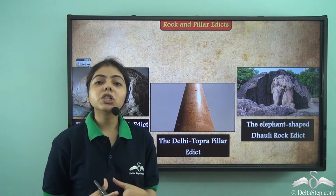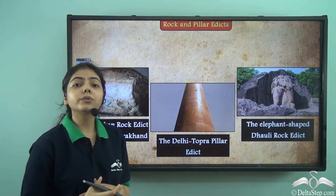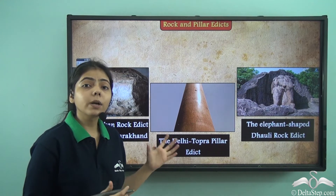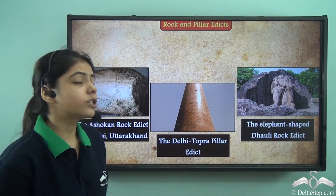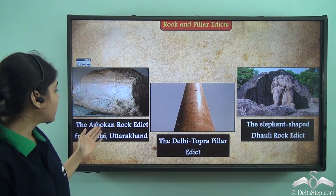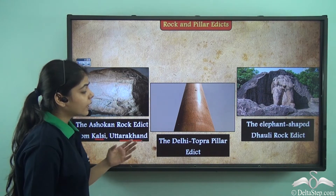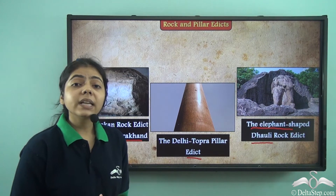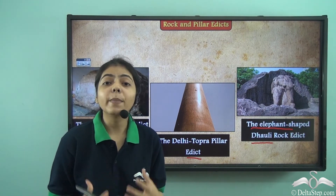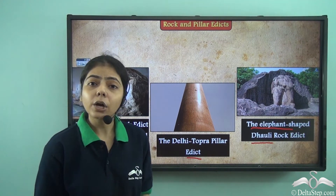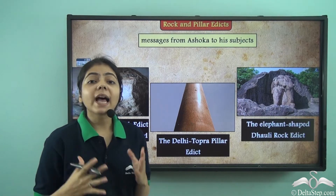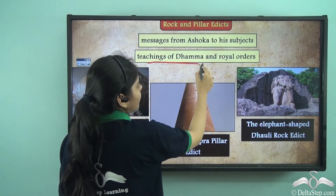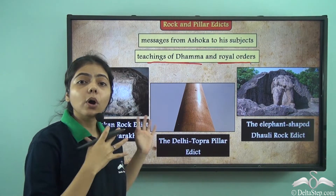Now let us look at the archaeological sources. We find rocks and pillar edicts. Ashoka got messages inscribed on pillars and rocks, known as edicts. You can see the Ashokan rock edict from Kalsi, Uttarakhand, the Delhi Topra pillar edict, and the elephant-shaped edict at Dhali. These edicts carried messages from Ashoka to his subjects, including the teachings of Dhamma and royal orders.